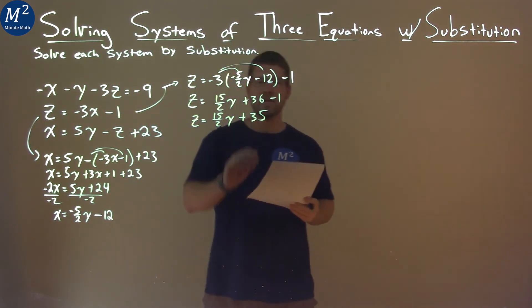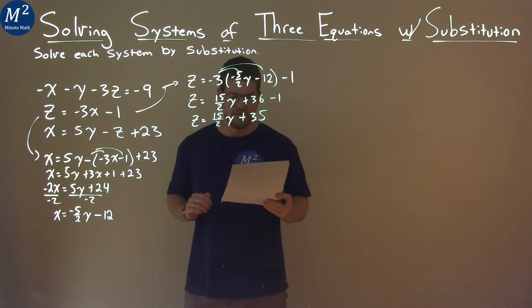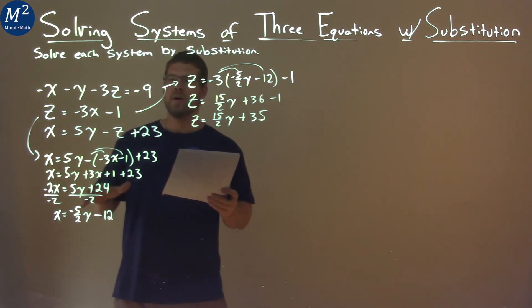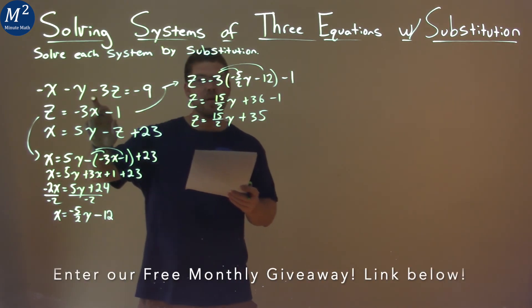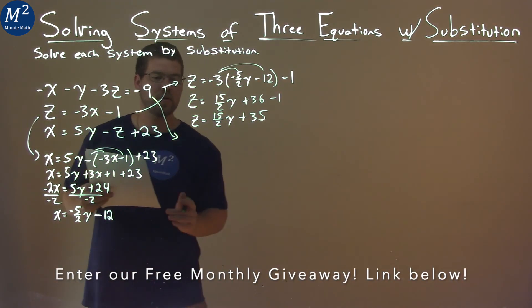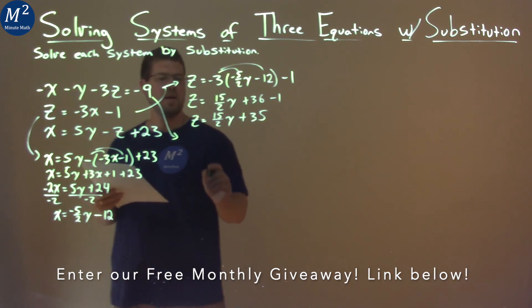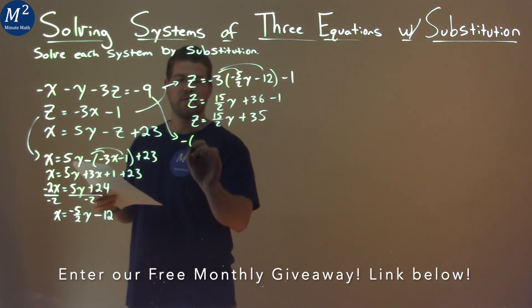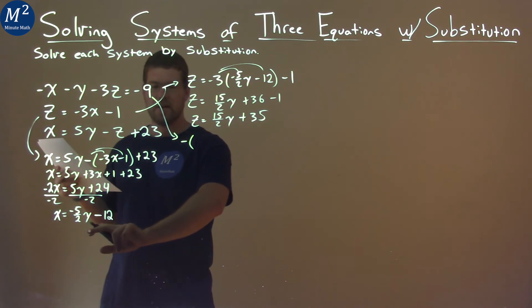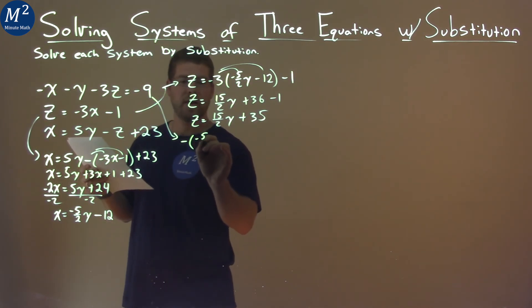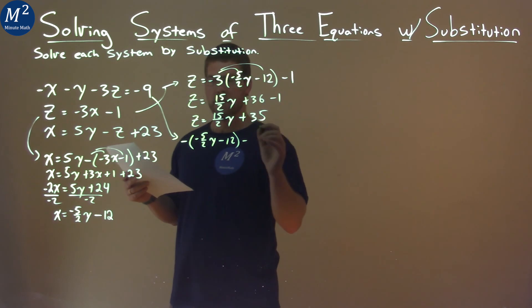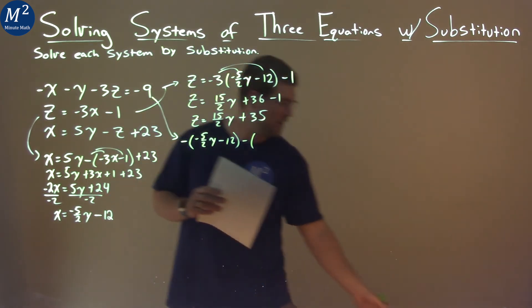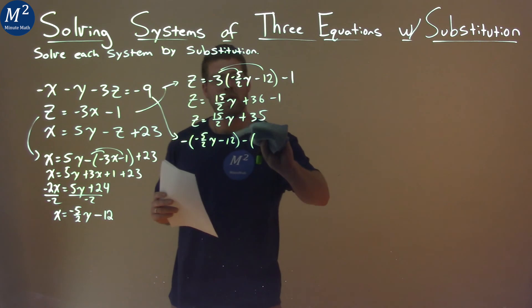So now we have z in terms of y and x in terms of y. We can now get y by itself. So what we're going to do is take the first equation right here. We're going to rewrite this equation, but instead of x I'm putting this equation we found for x in terms of y: negative 5 halves y minus 12. Then we have minus y, and y is the variable we're looking for, so y stays there actually.